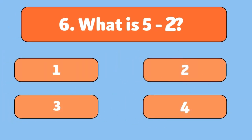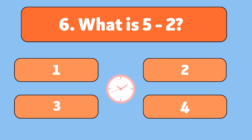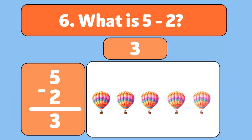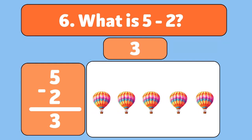What is five minus two? The answer is three. We start with five hot air balloons and let two float away. Let's count. One, two, three. We have three hot air balloons left.